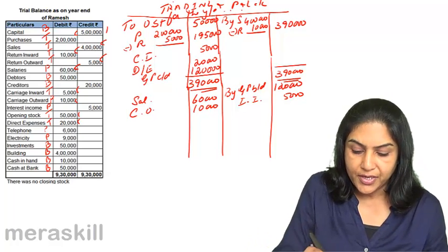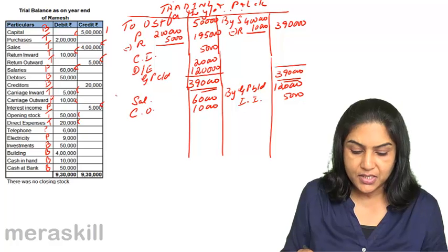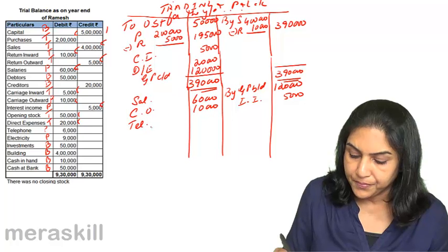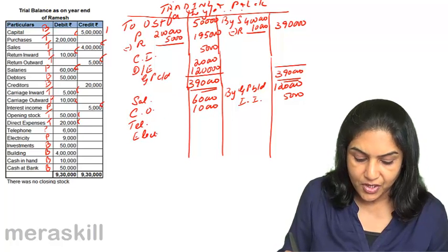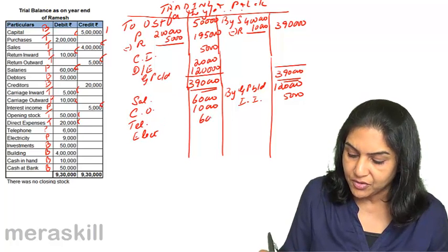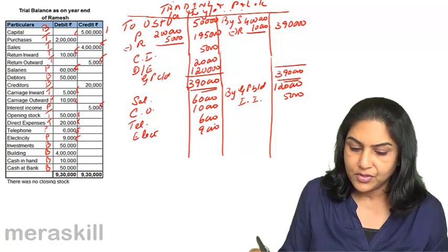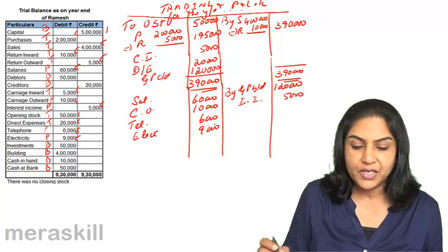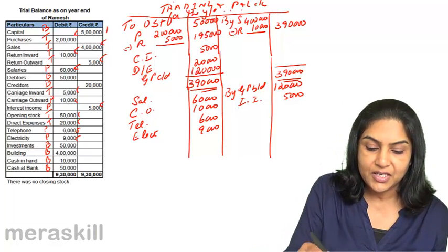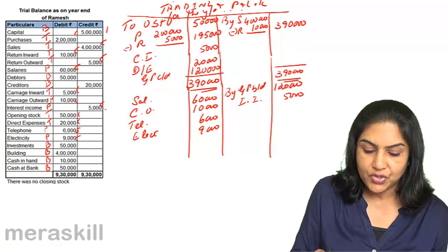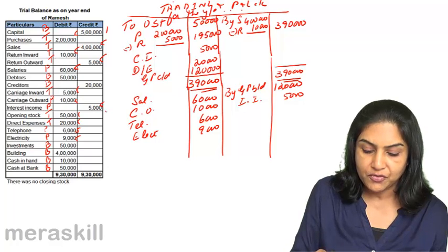Opening stock and direct expenses are already in the trading account. Telephone was 6,000 and electricity was 9,000 — both go to the profit and loss account. We should have covered everything: purchases, sales, all trading items, and all profit and loss items. Carriage outward to profit and loss: 5,000.